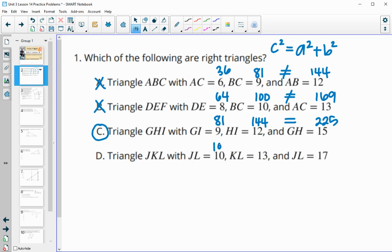In part D, 10 squared is 100, 13 squared is 169, and 17 squared is 289. 100 plus 169 is not equal to 289, so this is not a right triangle.